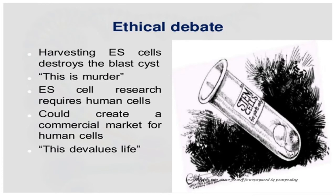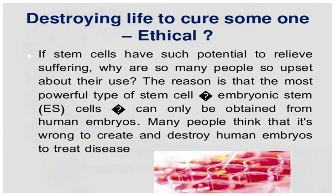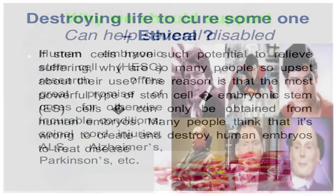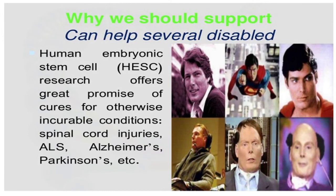Ethical debates and concerns are a very important topic regarding the use and applications of stem cells. Harvesting ES cells destroys the blastocyst, which raises ethical concerns. If this work is for human welfare, it can improve someone's life. Human embryonic stem cell research offers great promise for curing otherwise incurable conditions such as spinal cord injuries, ALS, Alzheimer's disease, and Parkinson's disease.